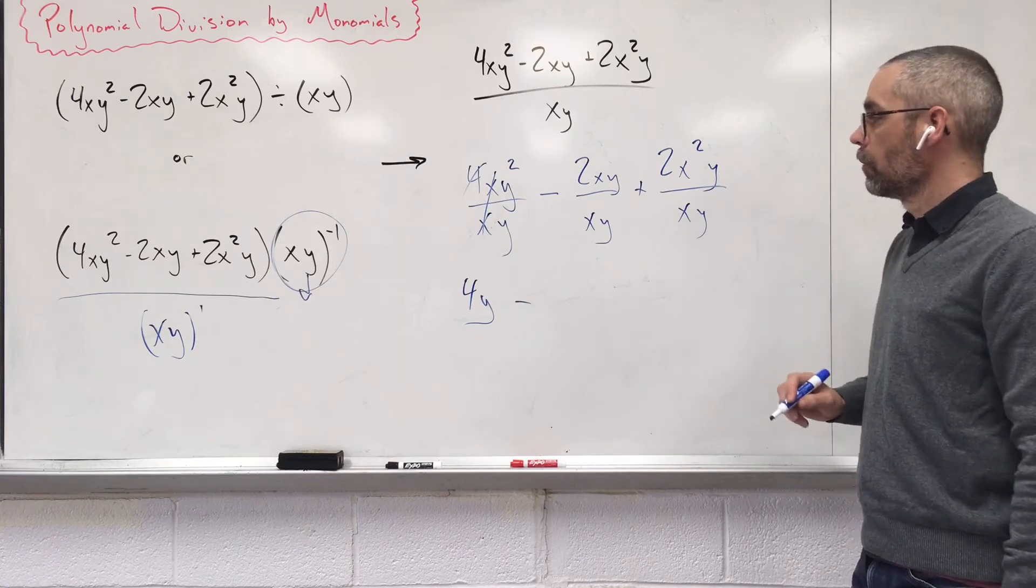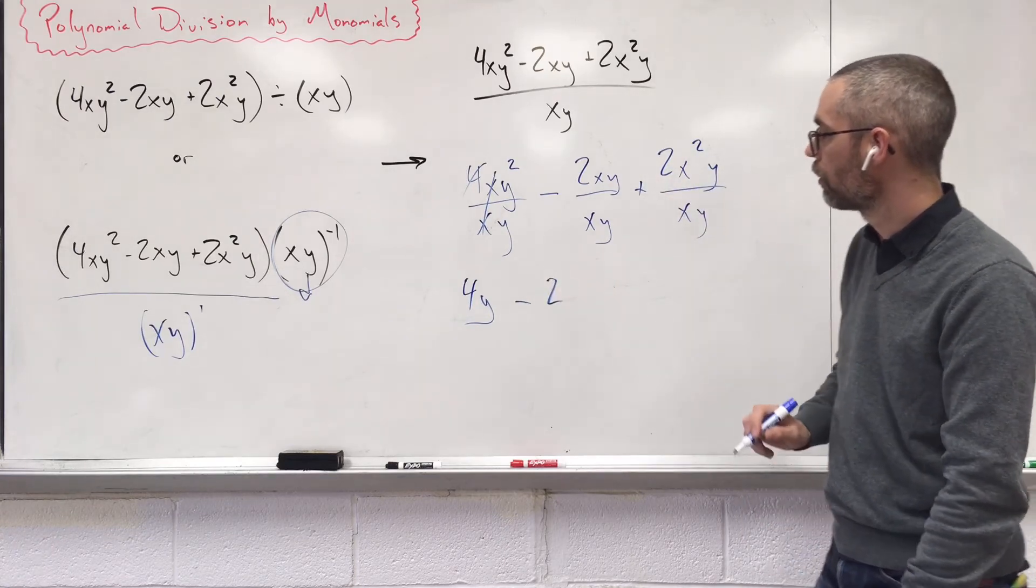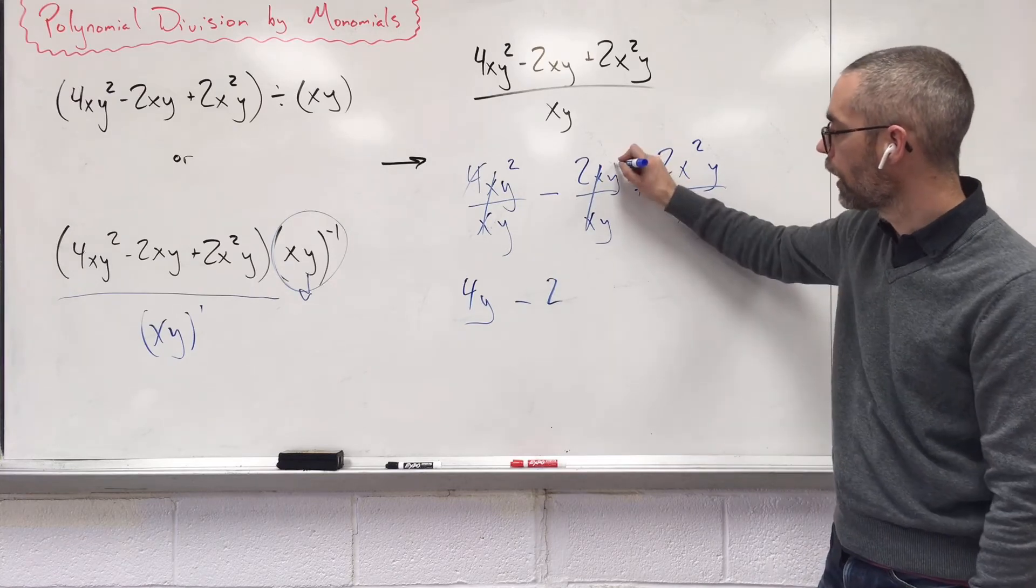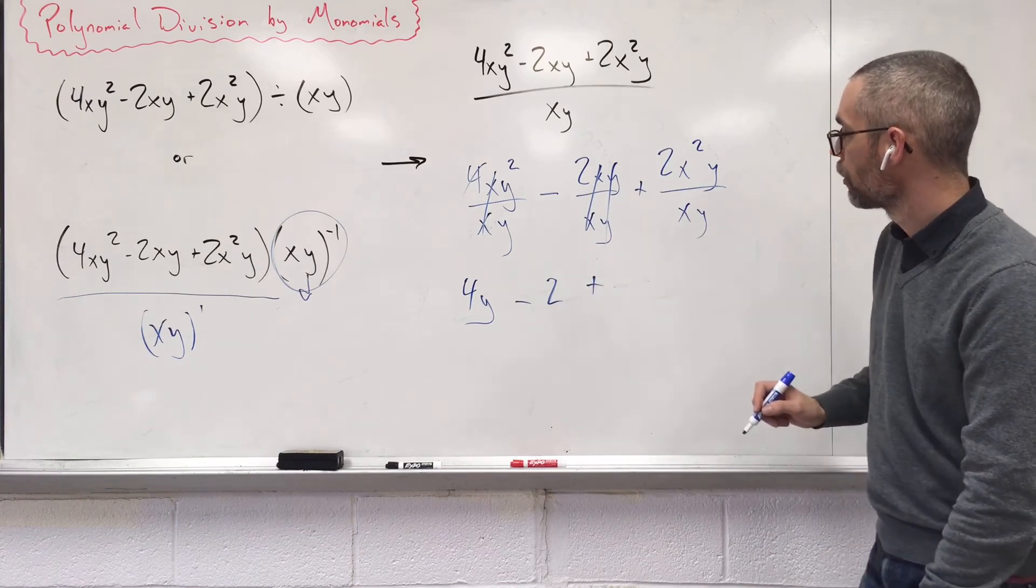Minus. Again, let's look at this. Nothing's going to combine with that 2, so we bring it over. My x's pair up, disappear. Y's pair up, disappear. That's all you're left with. Bring down the plus sign.